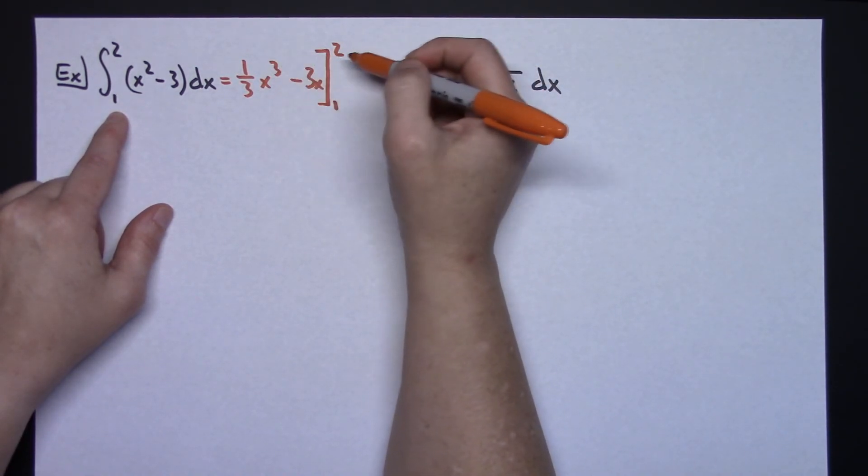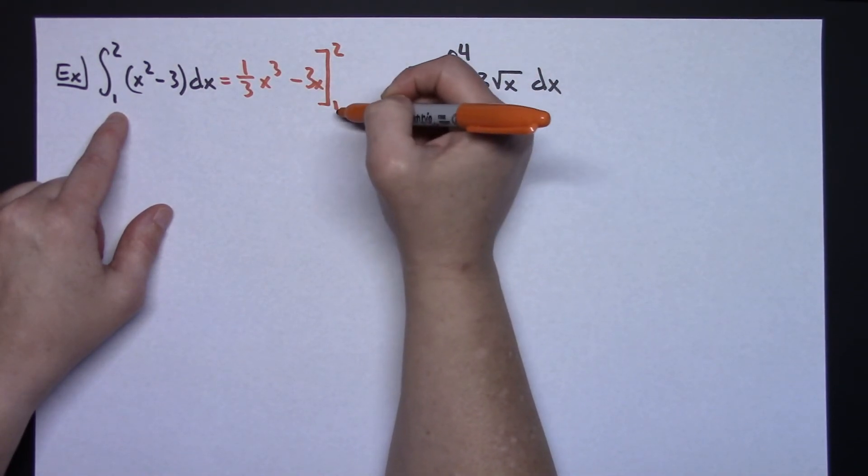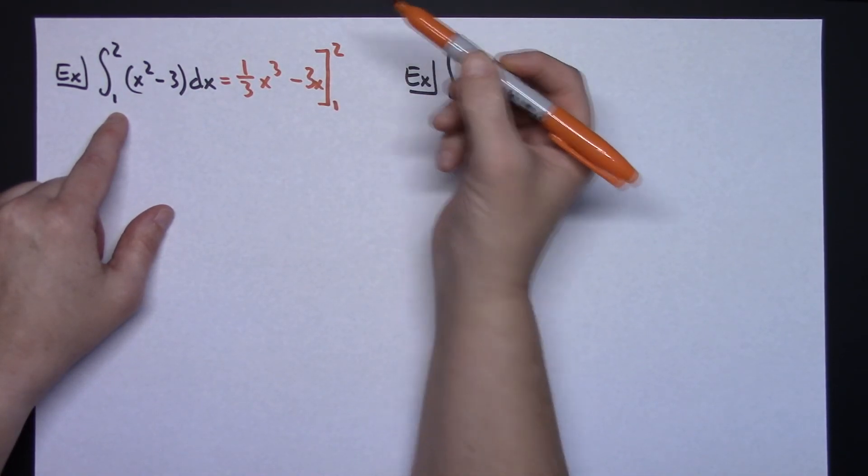Alright, that's showing now that I'm ready to do the F(b) minus F(a). Alright, I can plug 2 in and then subtract and plug 1 in.